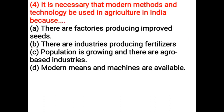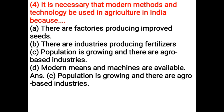It is necessary that modern methods and technology be used in agriculture in India because — Option A: There are factories producing improved seeds, Option B: There are industries producing fertilizers, Option C: Population is growing and there are agro-based industries, Option D: Modern means and machines are available. Correct answer is Option C: Population is growing and there are agro-based industries.